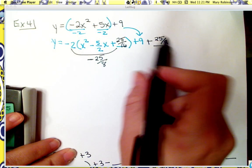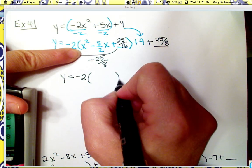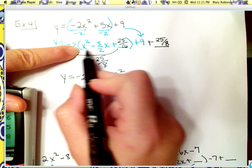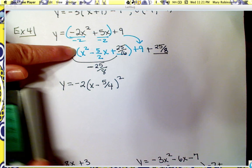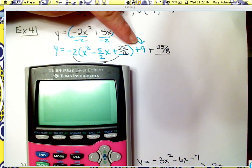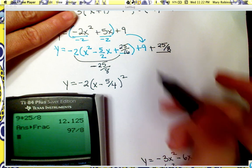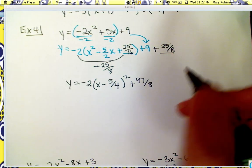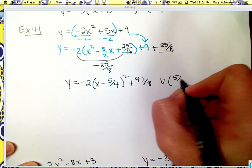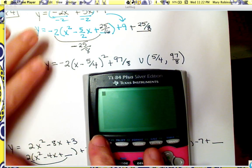From this point on the steps are all the same: bring down the a value, factor the perfect square trinomial — square root, keep the sign, square root — giving x minus 5 fourths, quantity squared. For the constant, we compute 9 plus 25 eighths, which equals 97 eighths. So the k value is 97 eighths. The vertex is positive 5 fourths, 97 eighths — switch what's inside, keep what's outside.